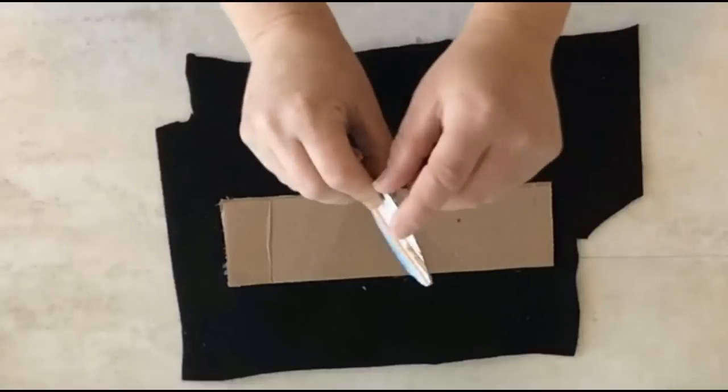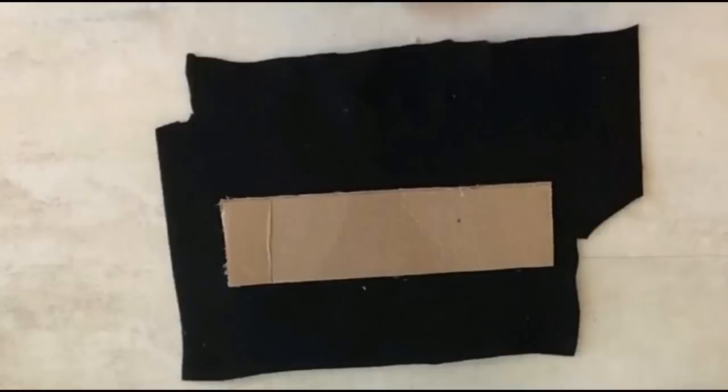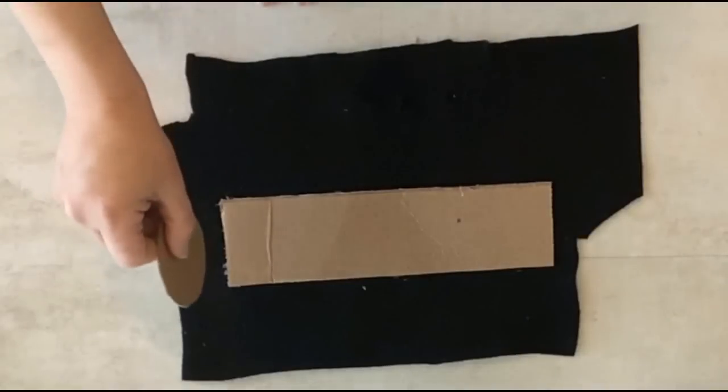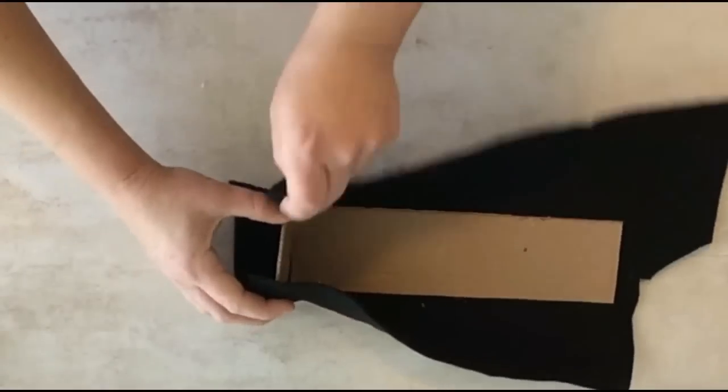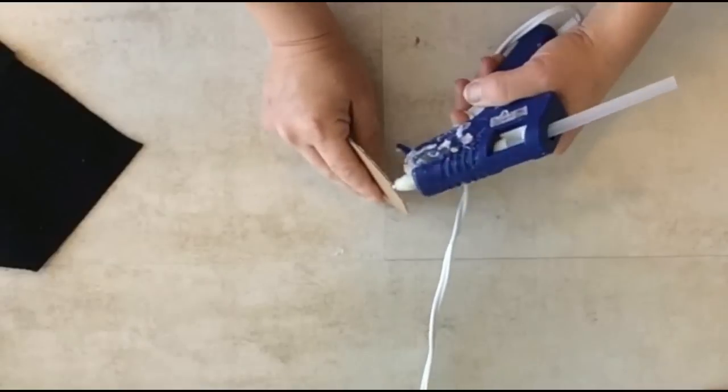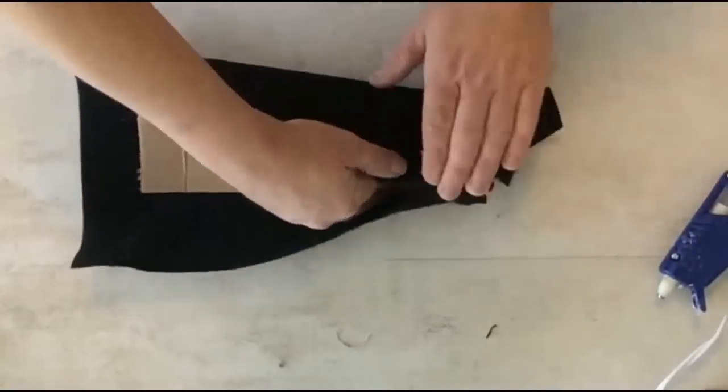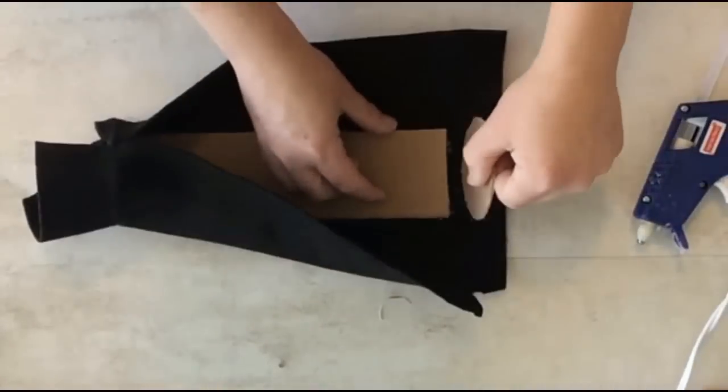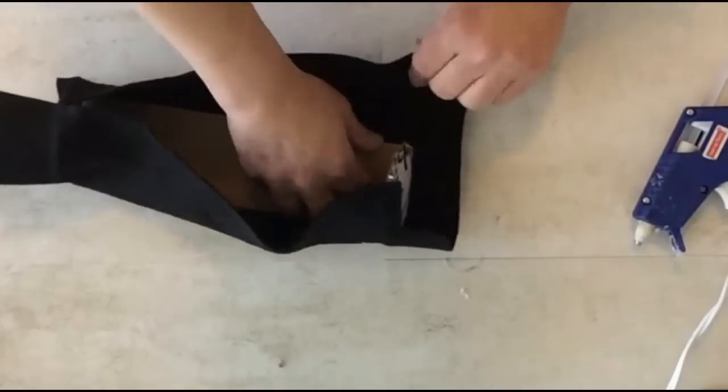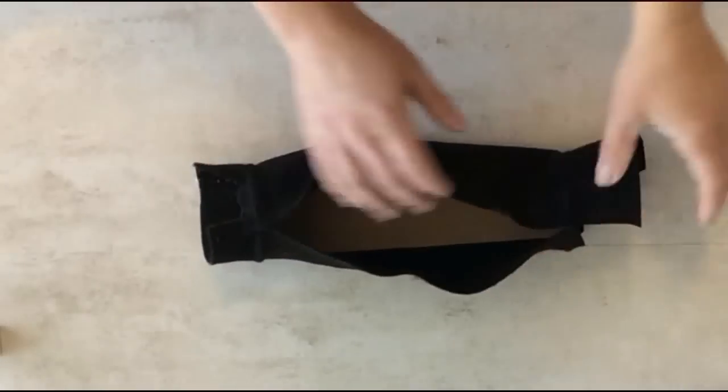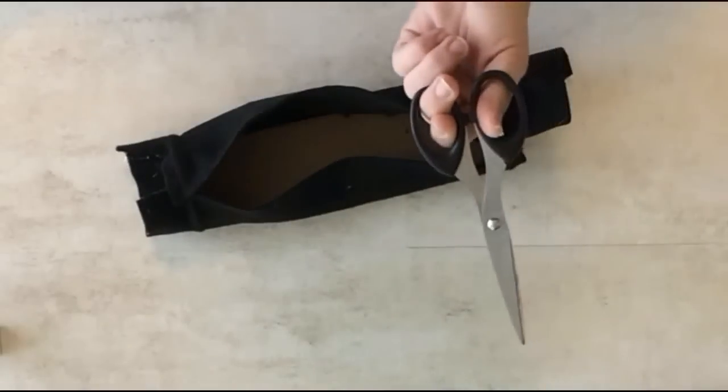Next, with your other two cardboard pieces, you're going to apply glue all the way around it on the rim. Then place them vertically on each side of the rectangle. Then wrap each end of the material around it to meet towards the center. Then you can trim off the excess material on both sides of the cardboard pieces with your scissors.